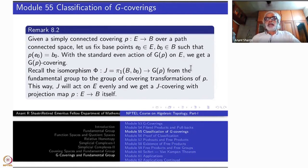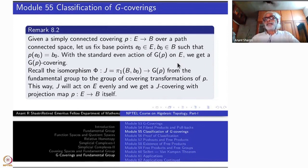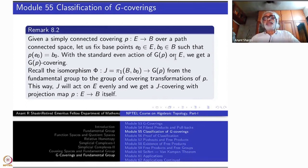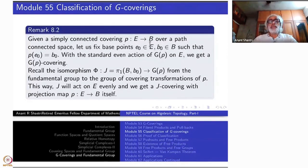Today we begin the classification of G-coverings; it will take some time before we complete it — the complete thing will not come today. The guiding principle here, our guide here, is the simply connected covering over the base space B. That just means we are first of all assuming that a simply connected covering exists. So B is a path connected space, and P from E to B is a simply connected covering.